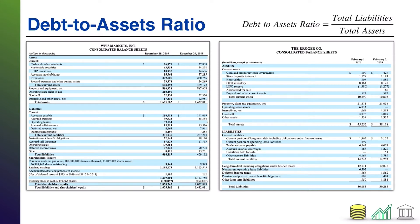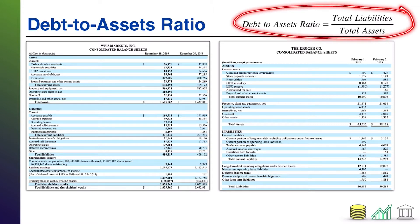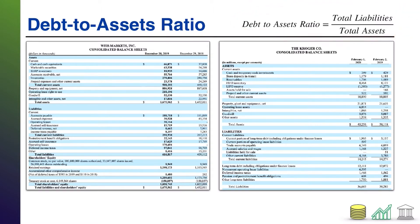When we say debts and assets, what we mean is total liabilities divided by total assets. Total debts over total assets.